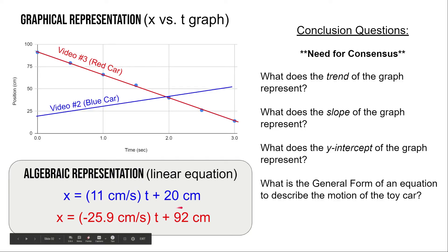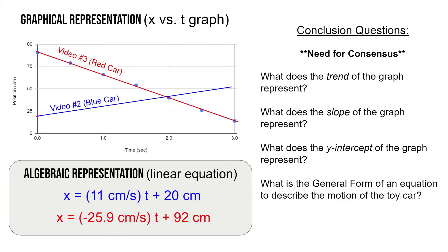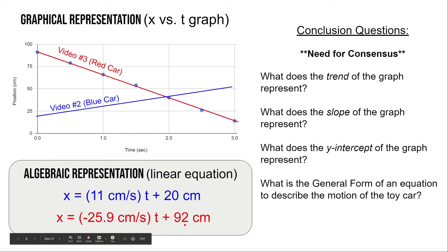What about the y-intercept? For the blue car it was about 20 centimeters and for the red car it was about 92 centimeters. With any y-intercept, it's going to be the y-value when the x-value is zero — or in our case, what the position value will be when the time value is zero. Where was the car at time zero? That's what the y-intercept represents. At time zero the blue car had an initial position of about 20 centimeters, and the red car, which started to the right and moved back to the left, had an initial position of about 92 centimeters. So the y-intercept on a position versus time graph tells us where the object started — its initial position.